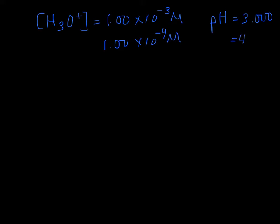For instance, what if I had a concentration of hydronium ion that was 1.00 times 10 to the minus 3 molar? If you plug into your calculator negative log 1 times 10 to the minus 3, you'll get a pH of 3.000. If it's 1 times 10 to the minus 4 molar, you'll get a pH of 4.000. If it's 1.0 times 10 to the minus 8 molar, you'll get 8.000. And so forth and so on.